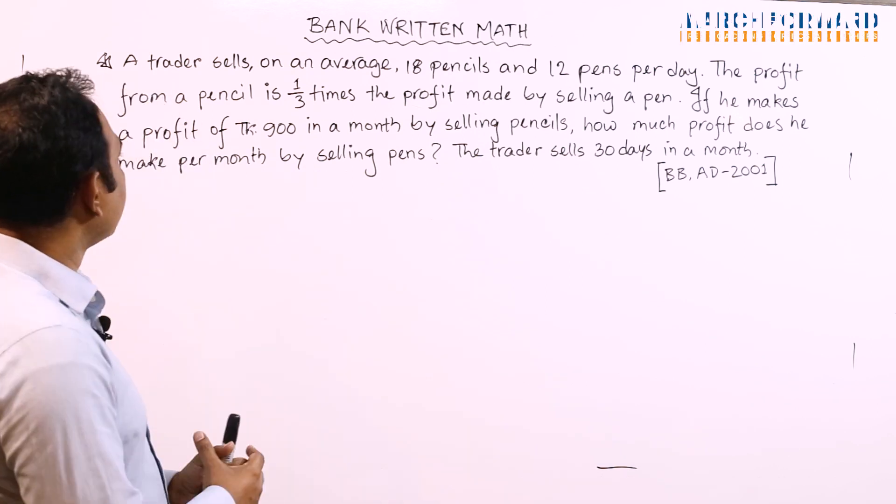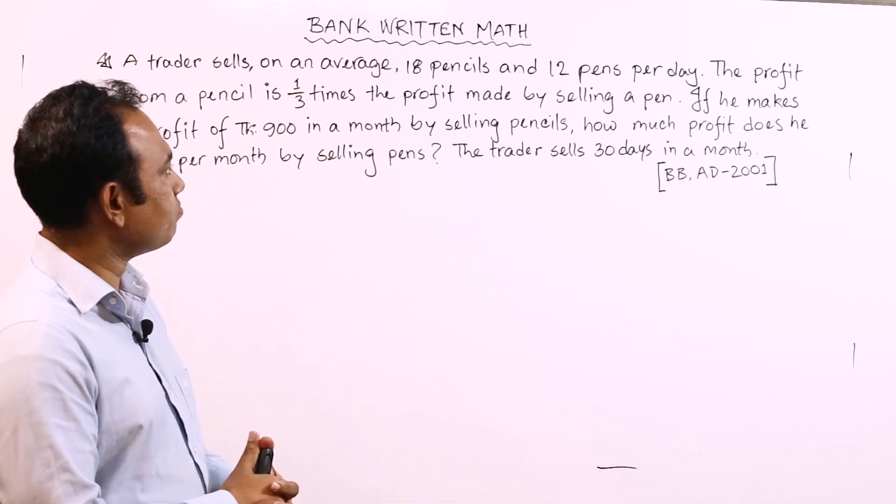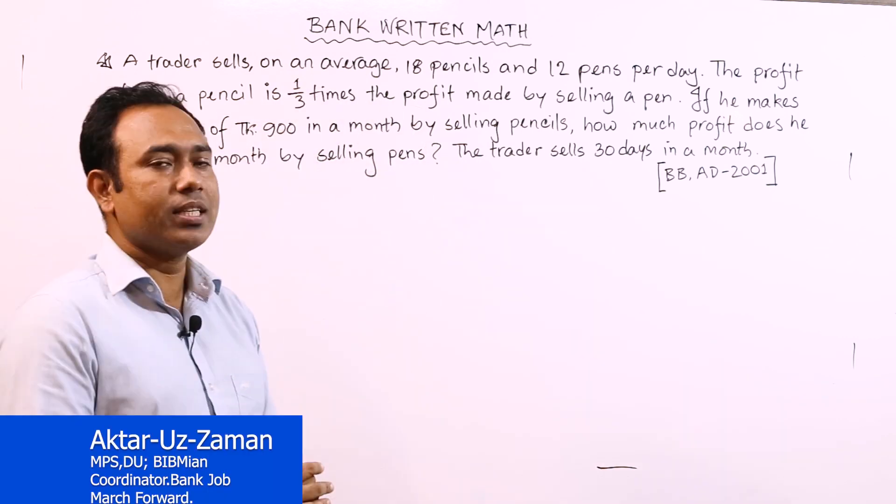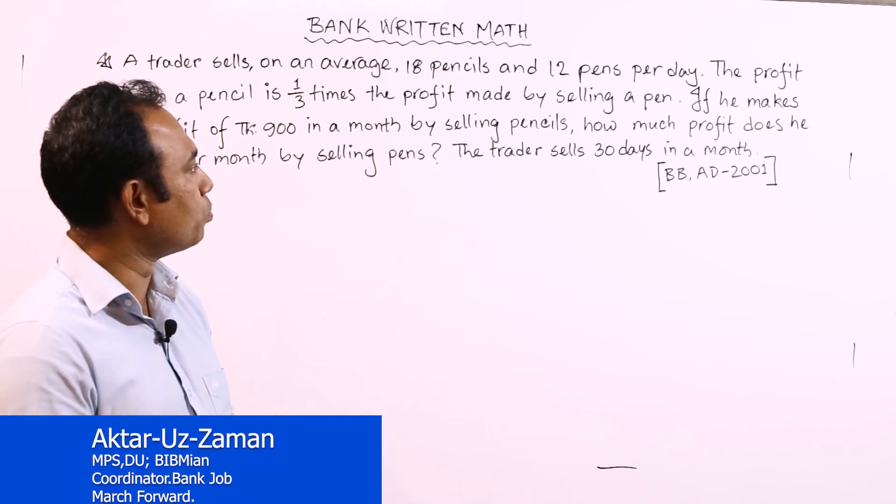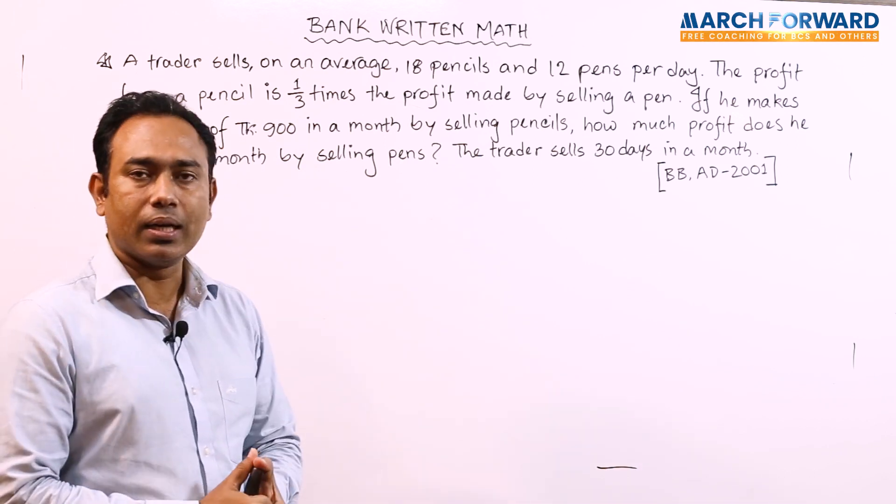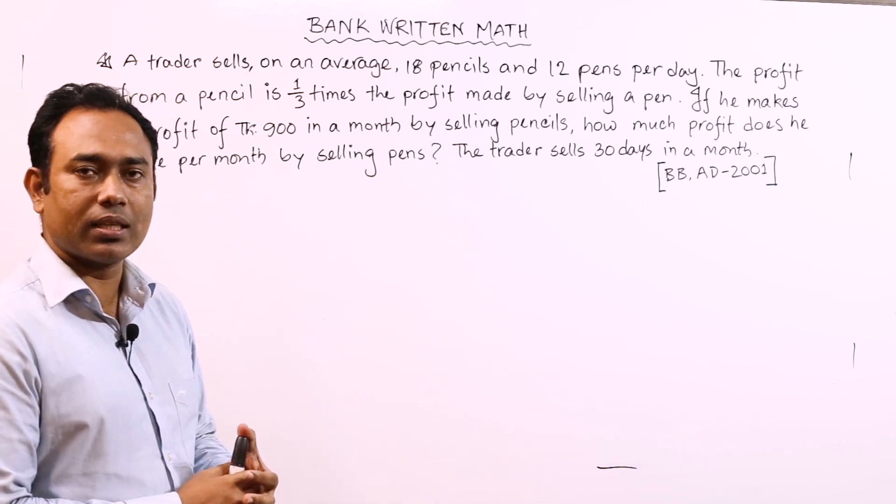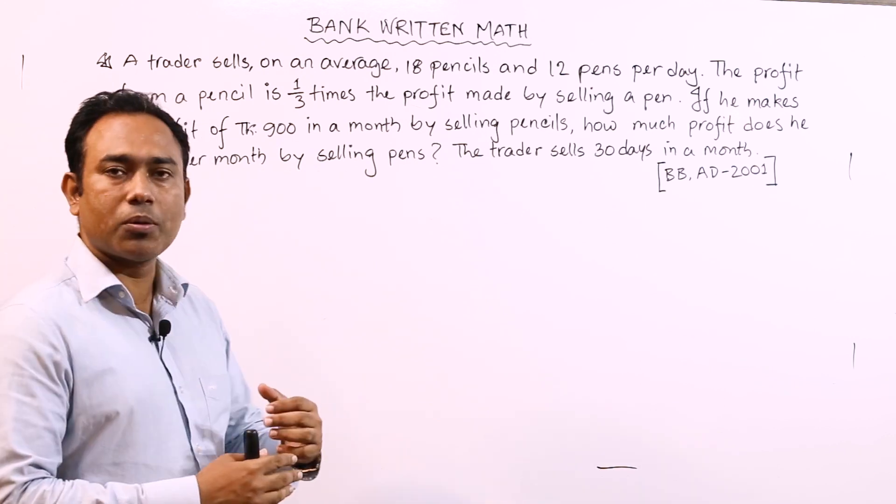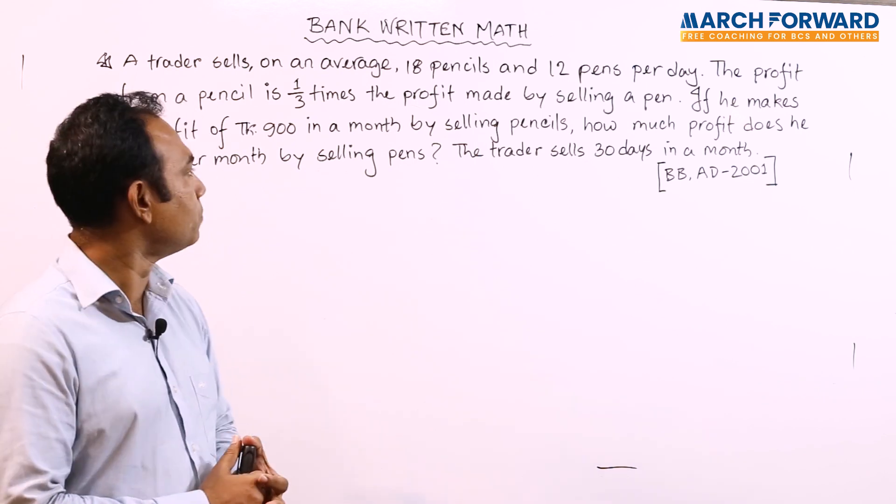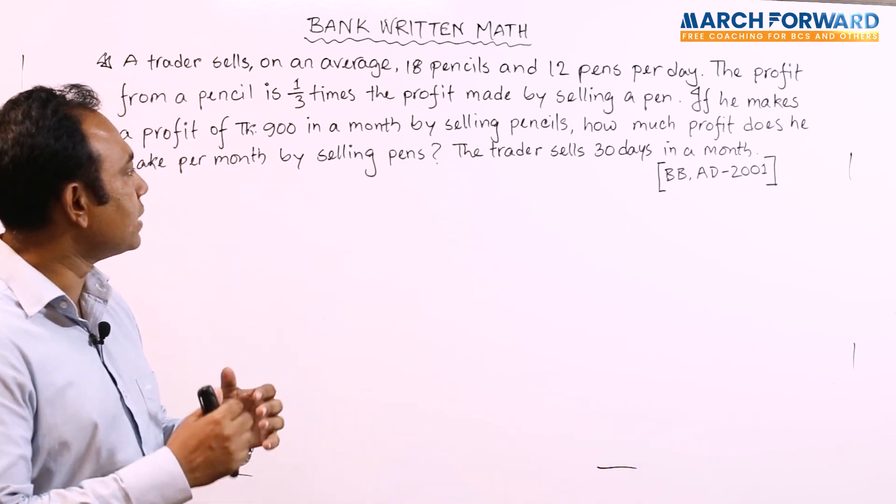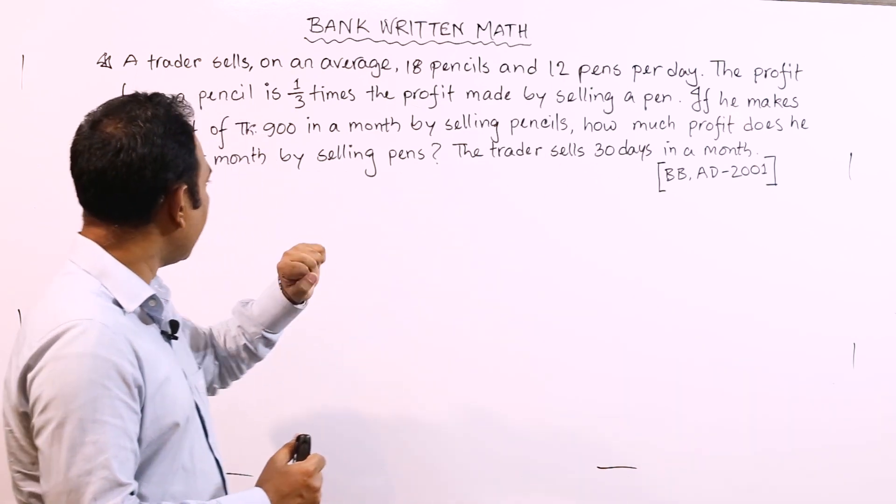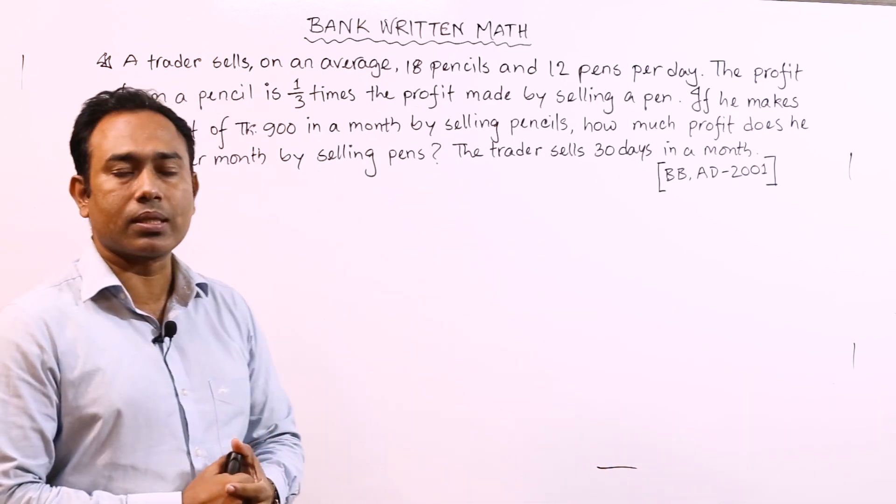A trader sells, on an average, 18 pencils and 12 pens per day. The profit from a pencil is one-third times the profit made by selling a pen. If he makes a profit of 900 taka in a month by selling pens, how much profit does he make per month by selling pencils? The trader sells 30 days in a month.